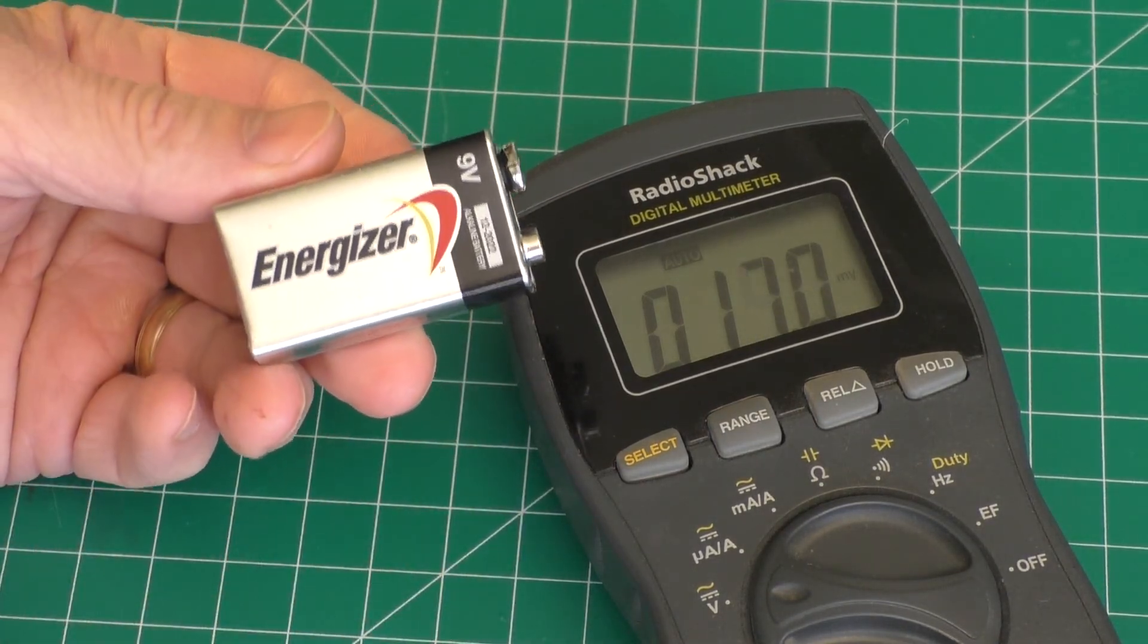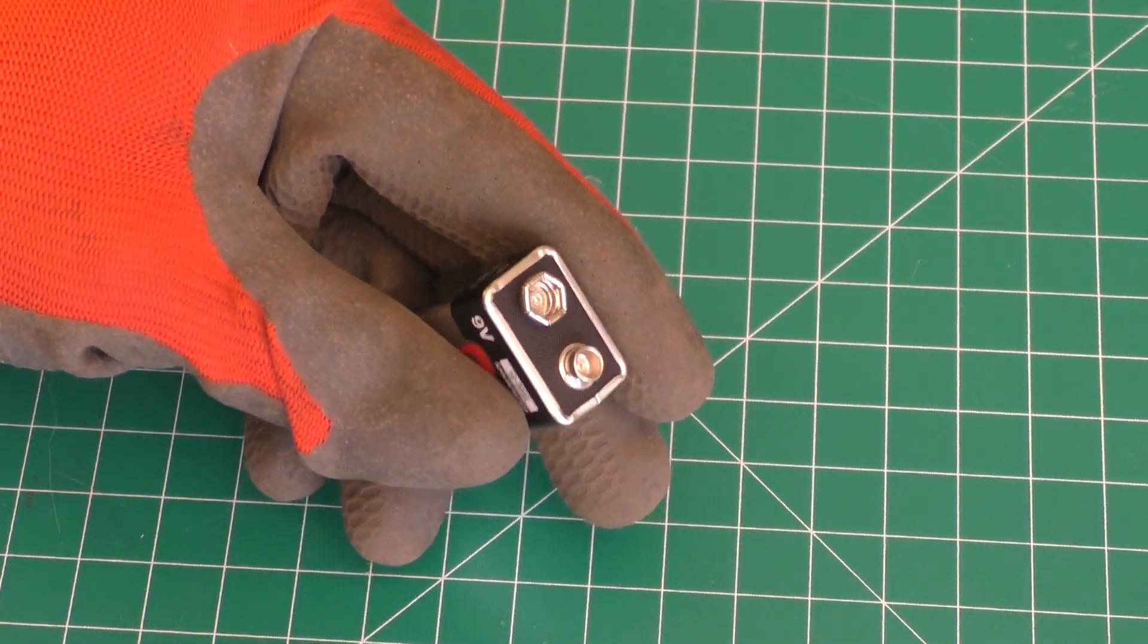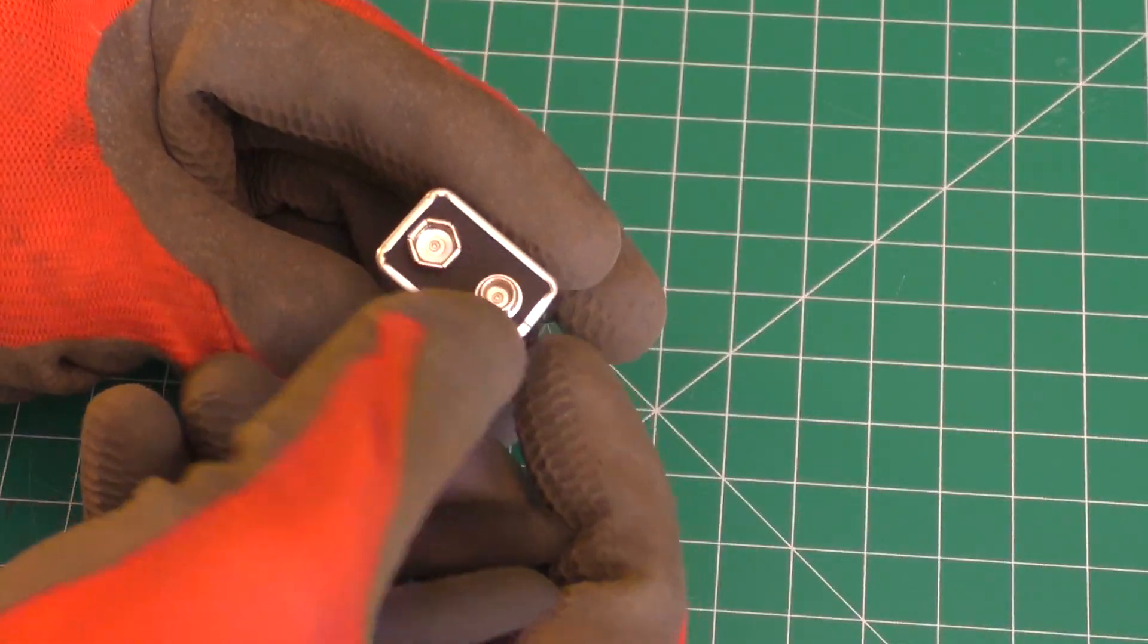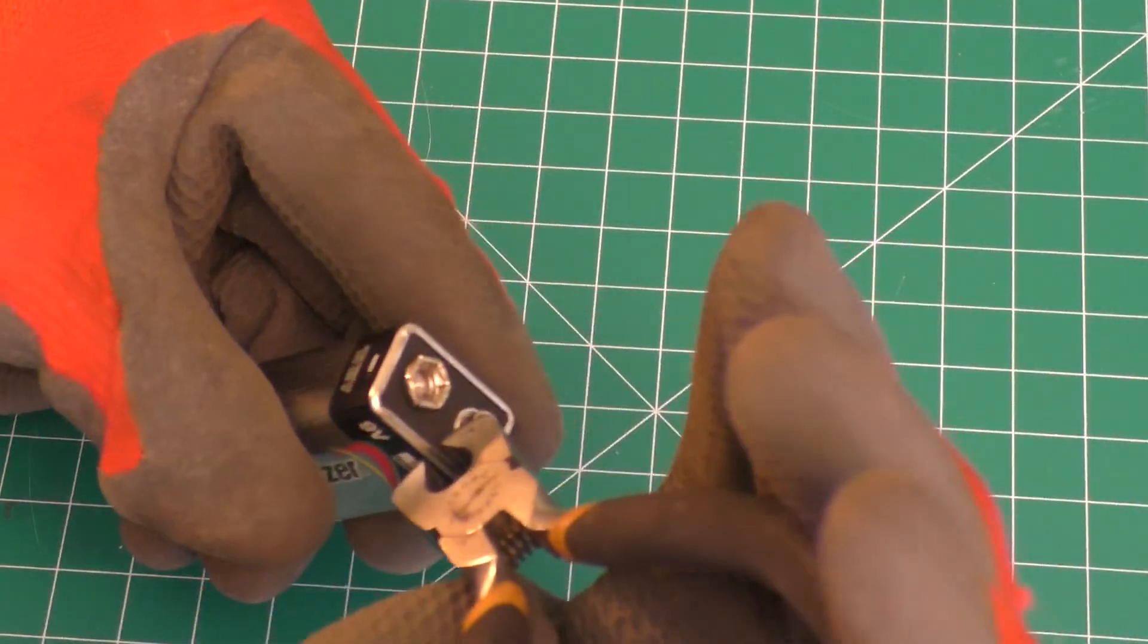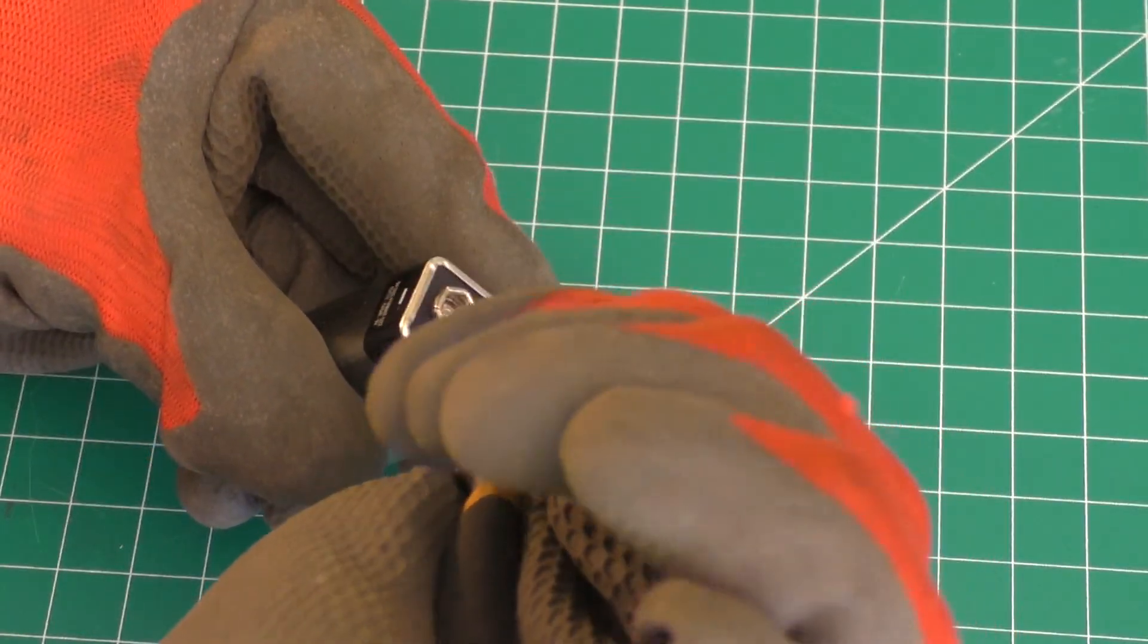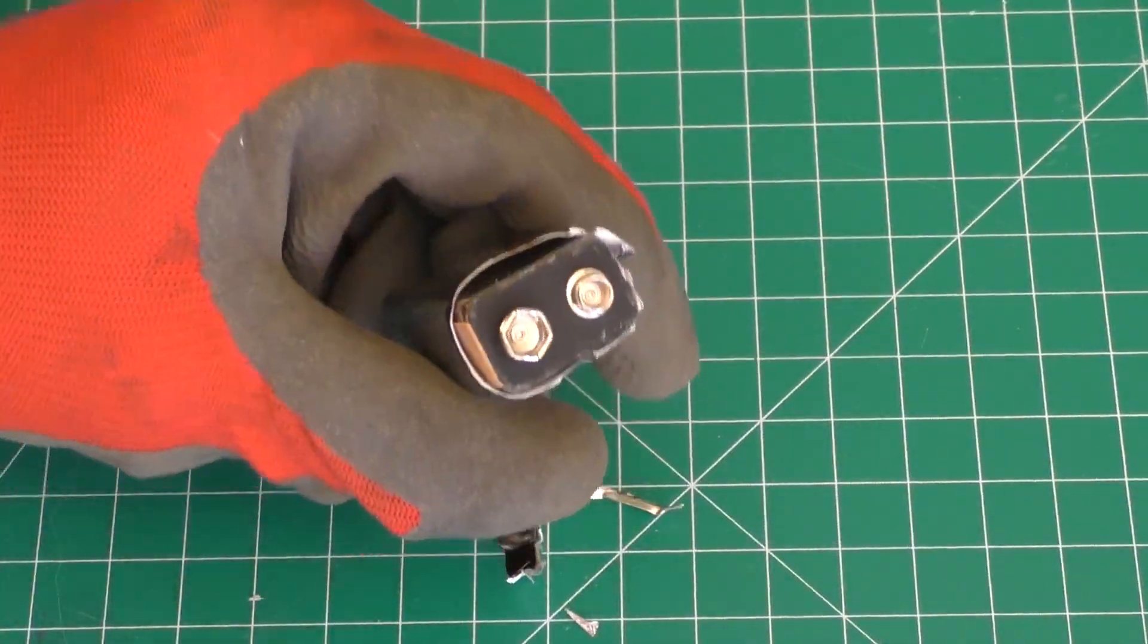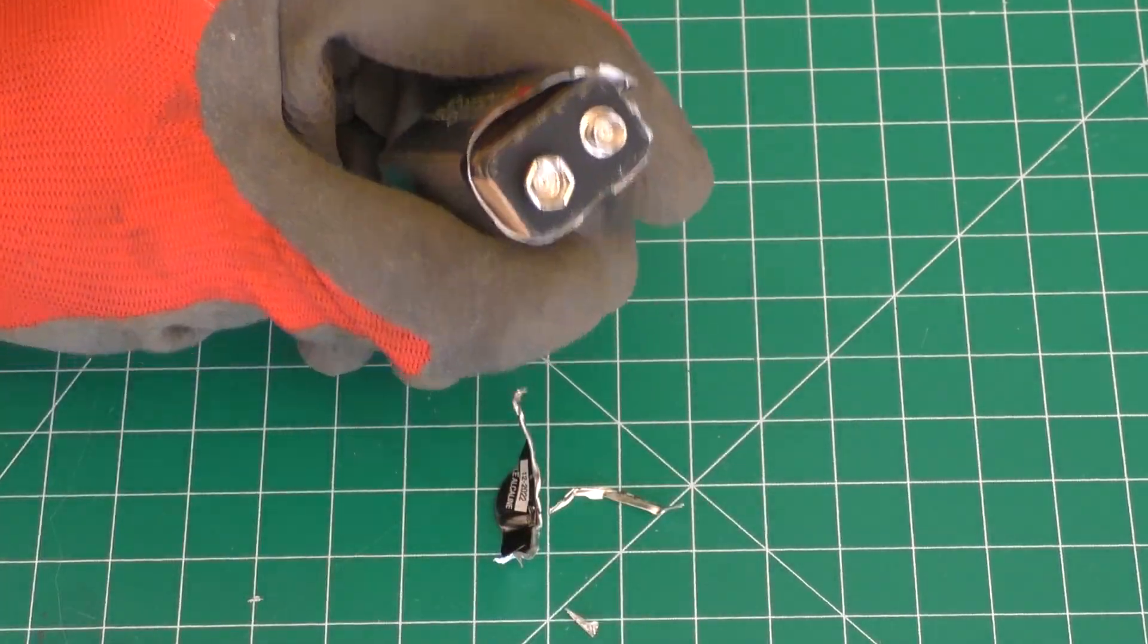So we'll start with this Energizer battery. Okay, so I did put some gloves on mainly just for sharp edges, not really for the electricity. But we'll just use these little snips here at these little contact areas, just to kind of snip off the edges, kind of holding this down. So we'll just kind of go around. I think I've got the top open.